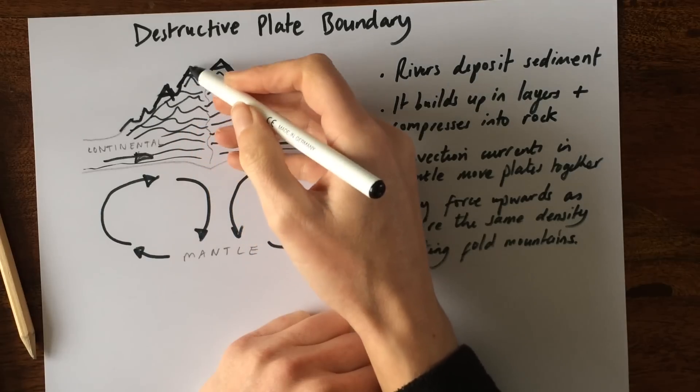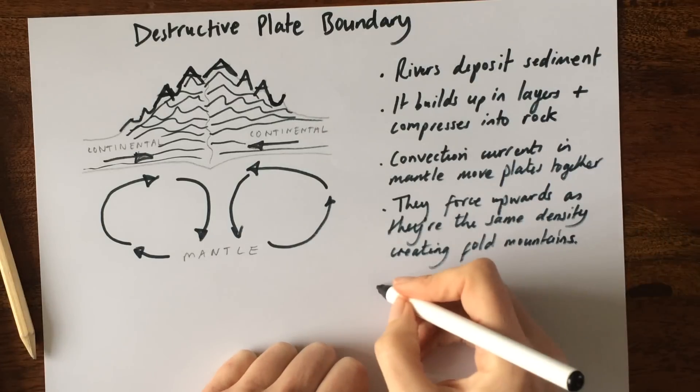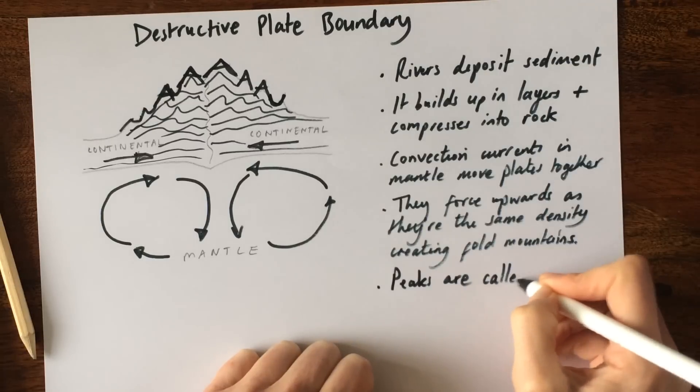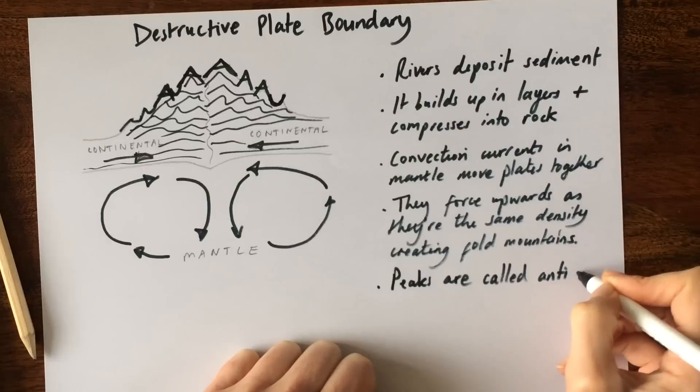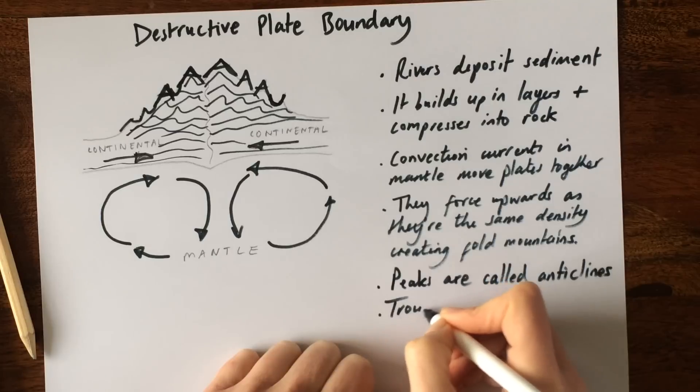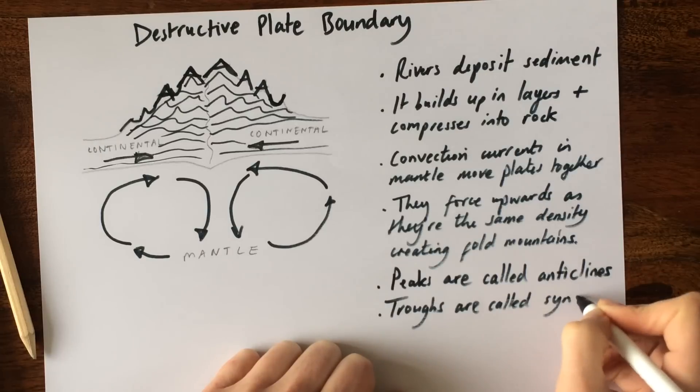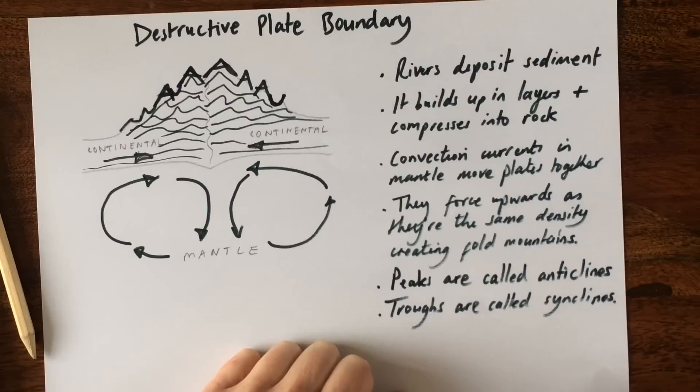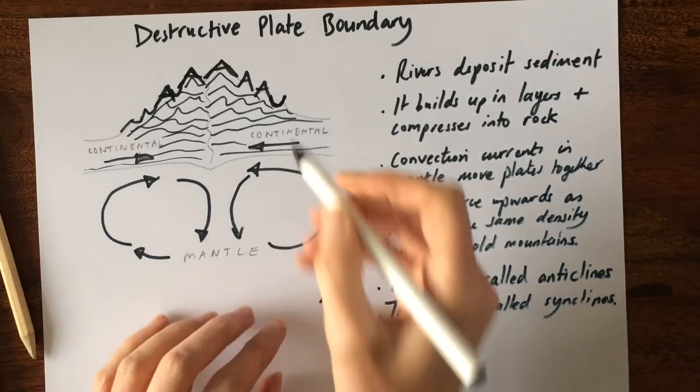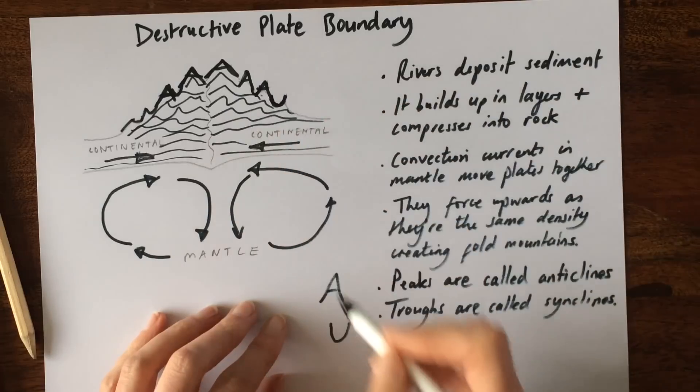So these are fold mountains, and you can see they've simply been folded upwards as the plates have crushed together. The peaks are called anticlines, spelled like that. And the troughs, so the peaks, mountain peak, and the trough is a bit coming down. So that's the trough there and that's the peak there. Peak there, trough there.